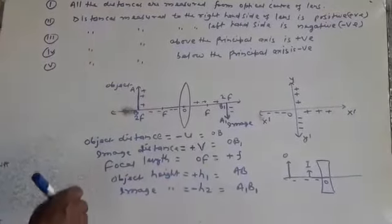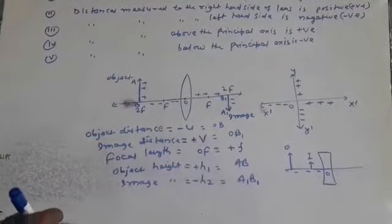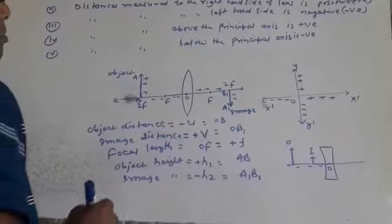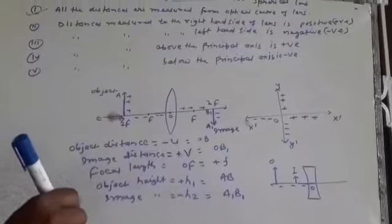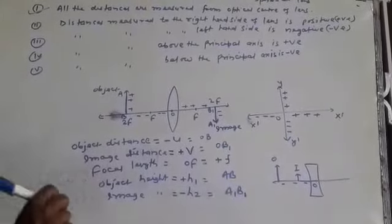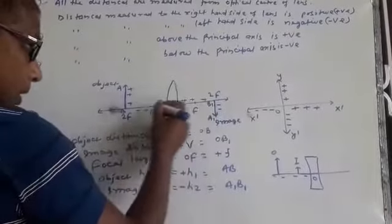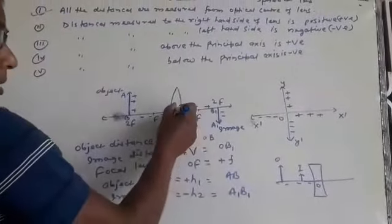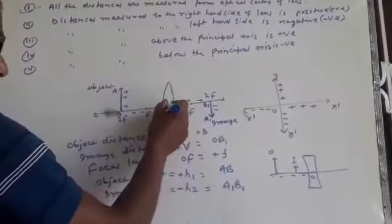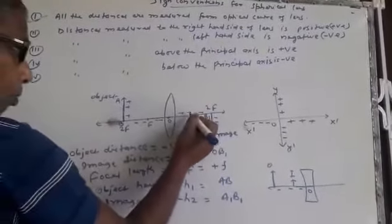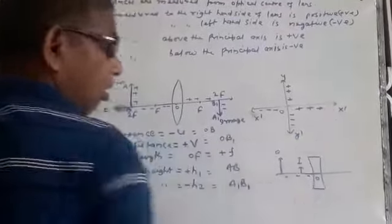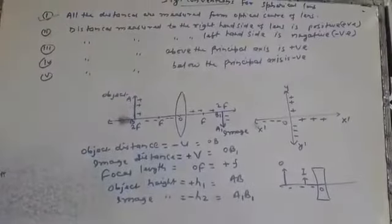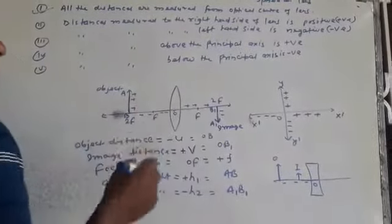There are 5 sign conventions for spherical lenses. First sign convention: all the distances are measured from the optical center of the lens. You are seeing here, it is optical center O, just like the pole of a mirror. If we want to measure OB or OF or any other distance, we have to start from O, the optical center, just like the origin of a graph. So the optical center is the origin.